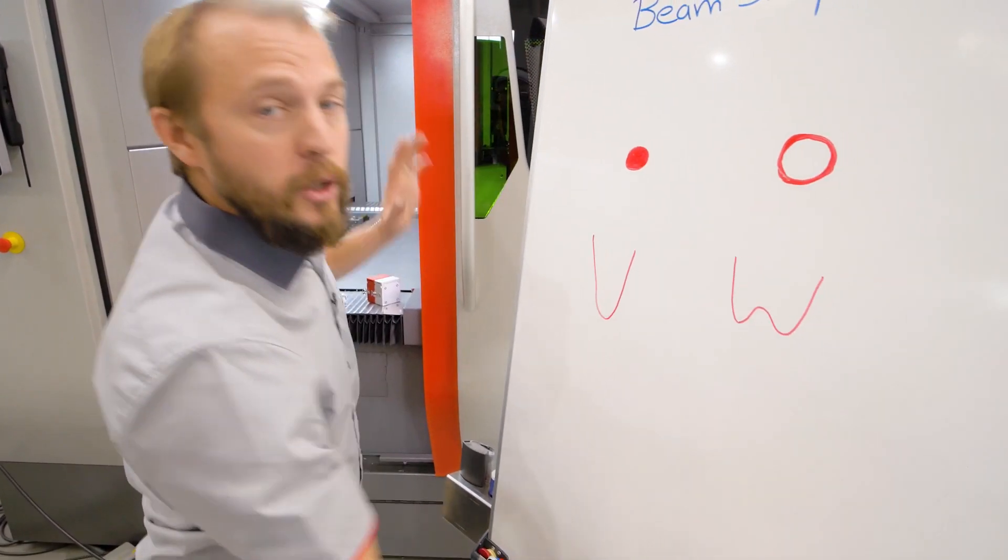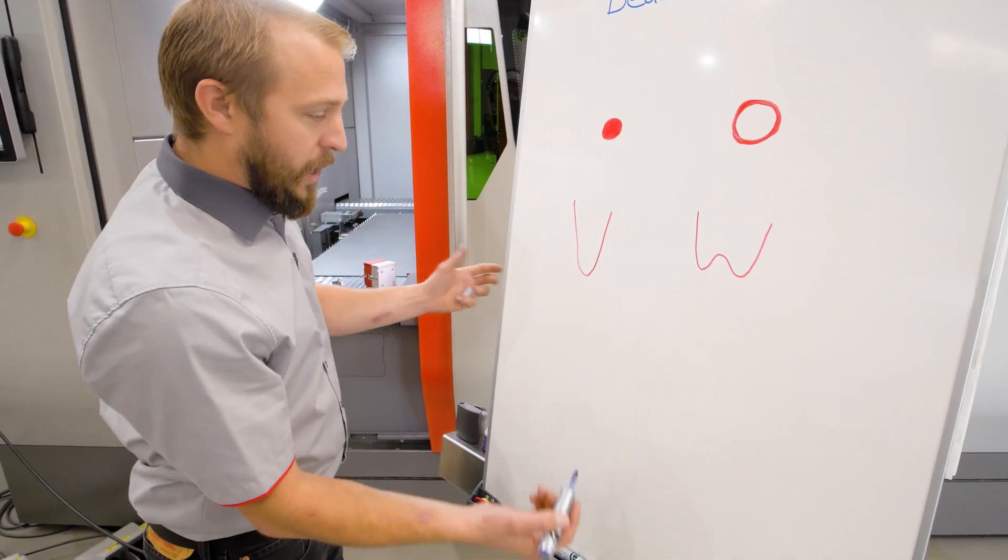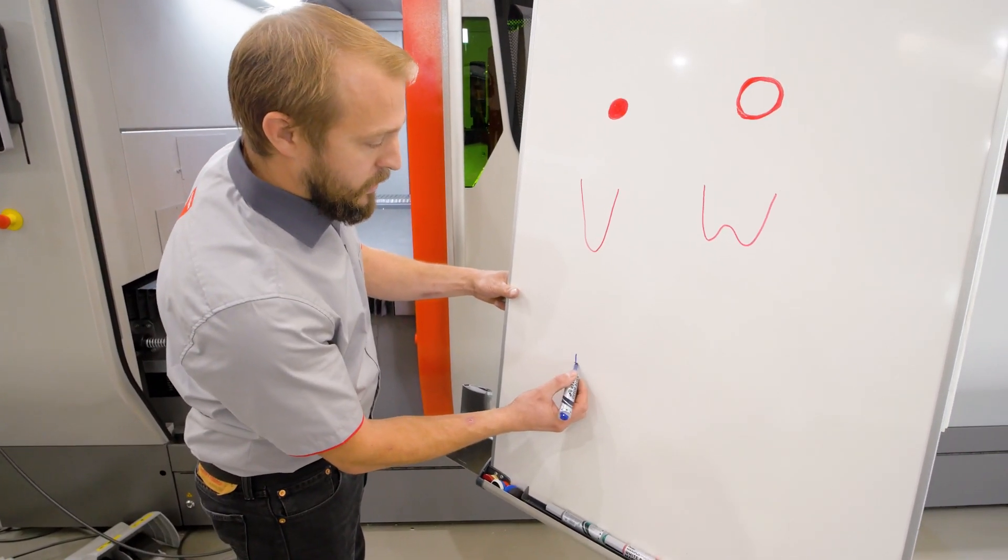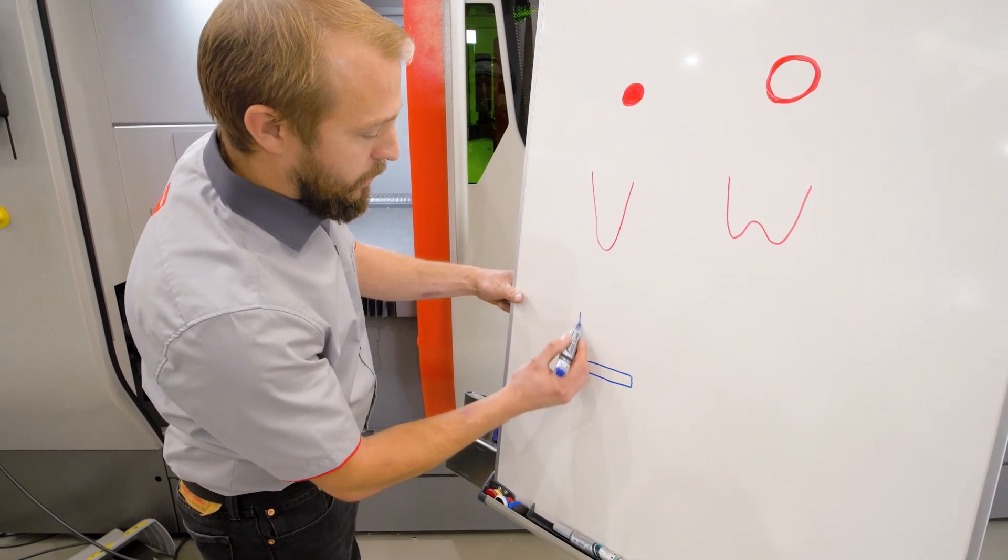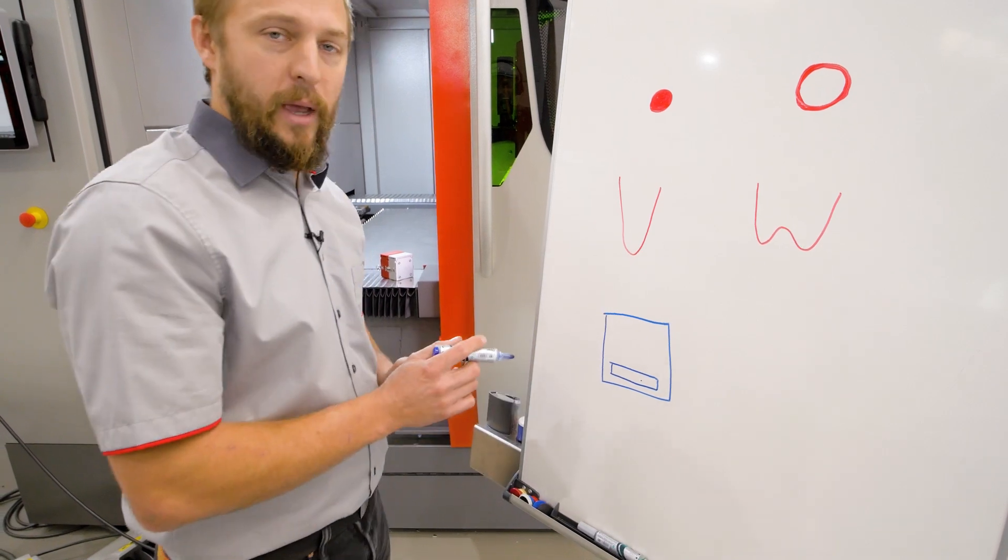So what did I change in the cutting head? As I talked about other times, the protective glass. Without beam shaper, we have here in this carriage that we changed just a protective glass.